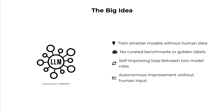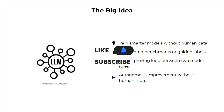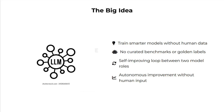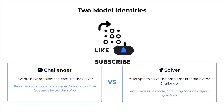The big idea is to train models smarter without human data, which is cumbersome to create. No curated benchmarks or golden labels are required. It is a self-improving loop between two model roles. You just initiate the feedback loop and eventually you don't need to provide any sort of dataset — it is completely autonomous.